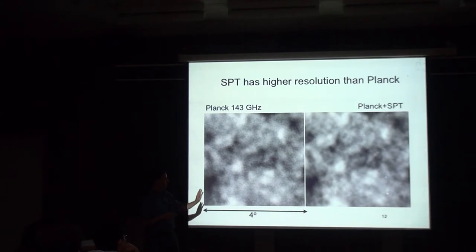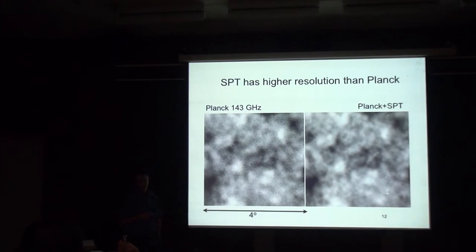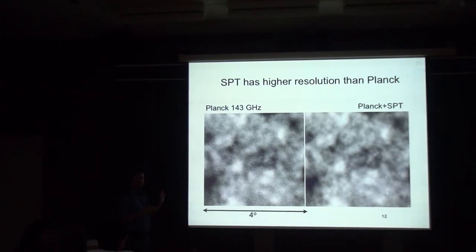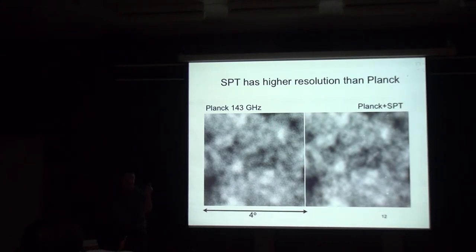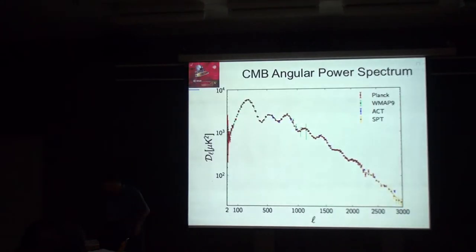You need high-resolution experiments to understand exactly how bright the galaxy foregrounds are. What do you do with maps like this? In general it just looks like a random blotchy field — and it turns out it's formally a Gaussian random field. If you take different spots and histogram the pixel values, it's just a Gaussian. The splotchiness is different on different scales, and the way to see that is to look at the angular power spectrum — the spherical harmonic transform of the microwave sky.